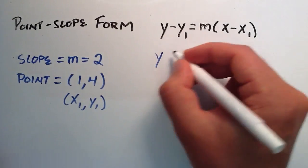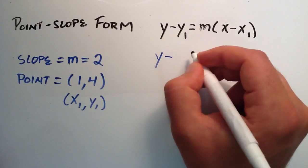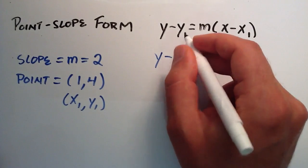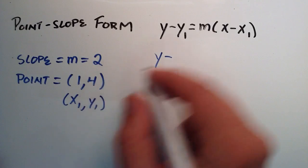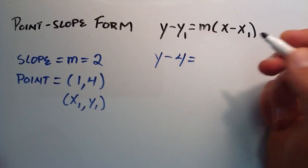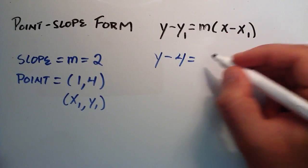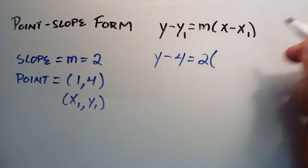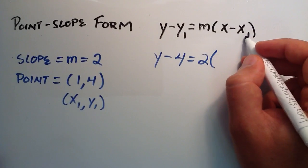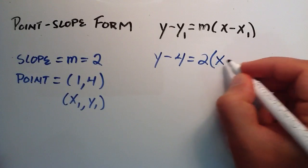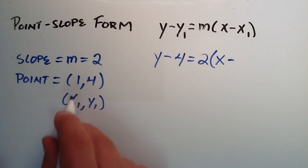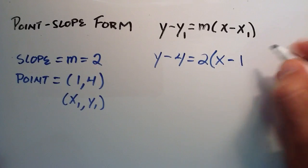So we simply just plug it into the point-slope form, y - y₁ = m(x - x₁). So our y₁ is simply the right-hand side of the point, our 4. And then that's equal to m, our slope, which was given to be 2, multiplied by x minus x₁. So x is just x, and x₁ is the left-hand side of our point, which is 1.